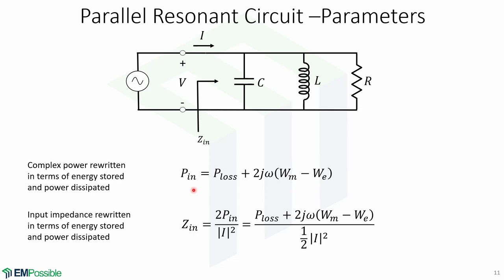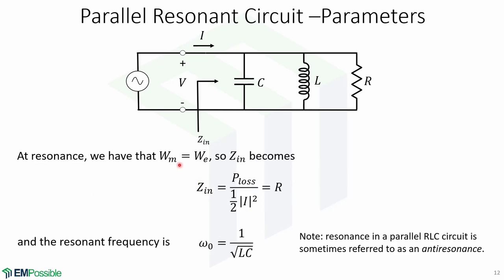The input impedance rewritten in terms of energy stored and power dissipated gives this familiar expression. At resonance, W_m equals W_e, so the input impedance becomes the power dissipated in the resistor over one-half |I|² squared, which equals R. The resonant frequency is given by 1 over the square root of L times C. As a side note, resonance in a parallel RLC circuit is sometimes referred to as anti-resonance.